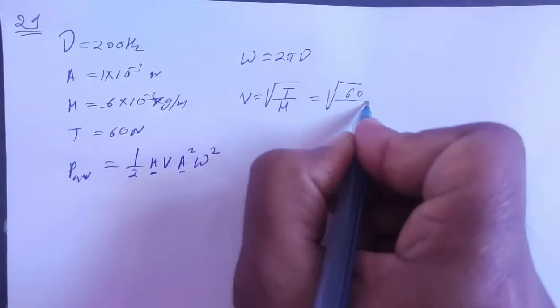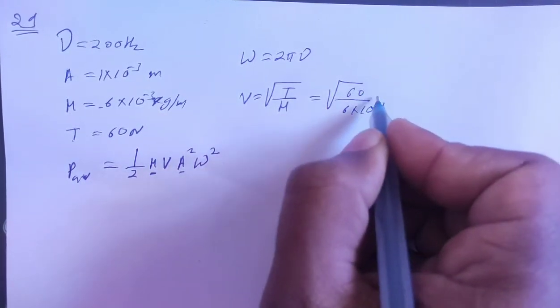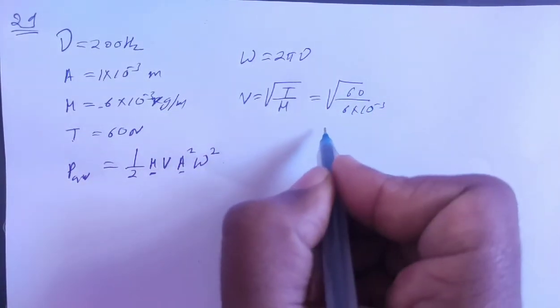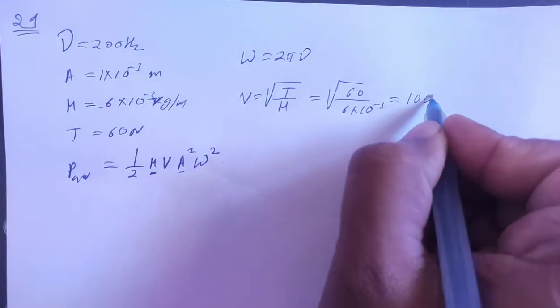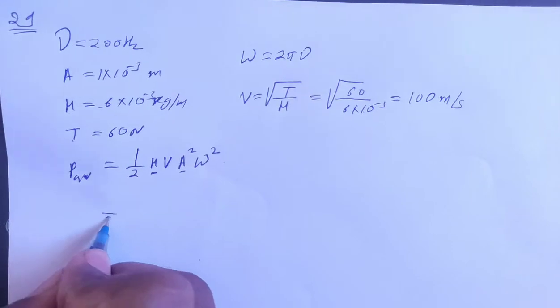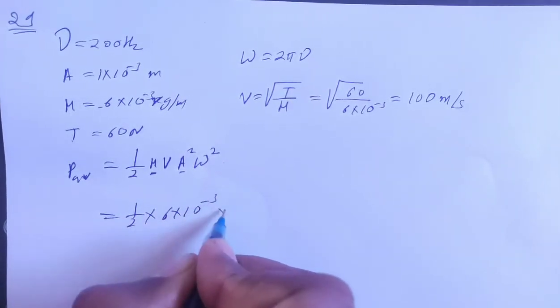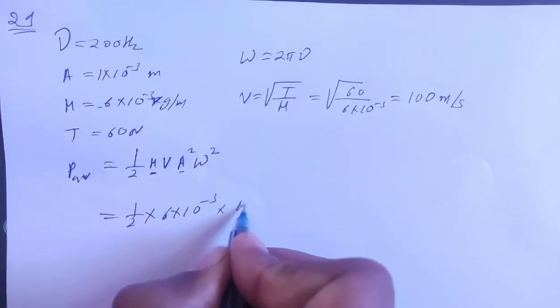Tension is 60 and mass per unit length is 6 times 10 to the power minus 3. So we have 10 to the power 4, root is 100. So speed is 100 meters per second. Plugging in values: amplitude 1/2...